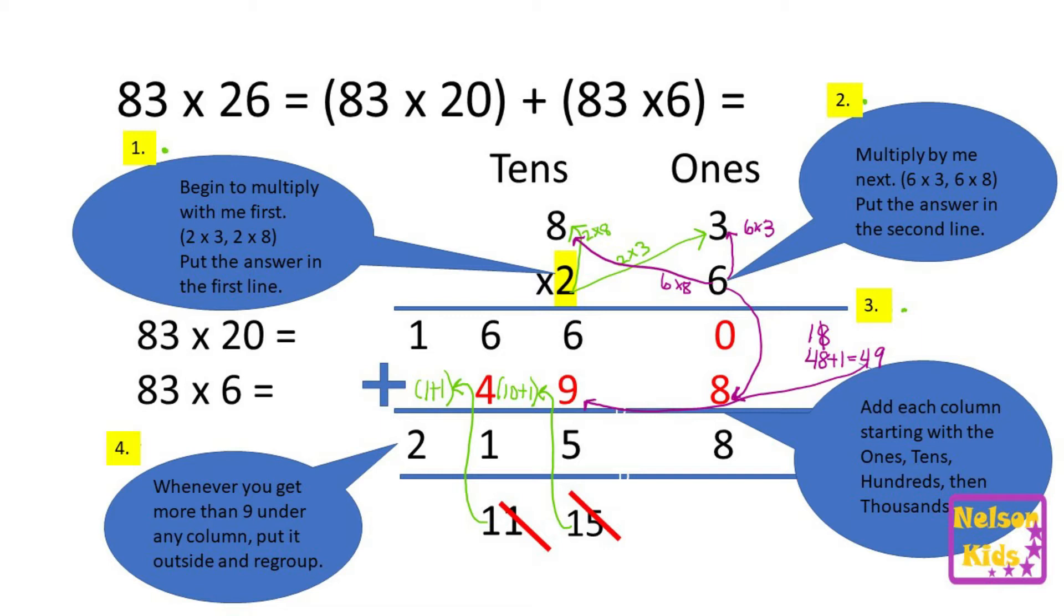Always remember that before you go forward. Begin to multiply with the first number in the multiplier under the tens column, which in this case is the digit 2. So you're multiplying 2 by 3 and by 8, and that will give you the product for the first line.